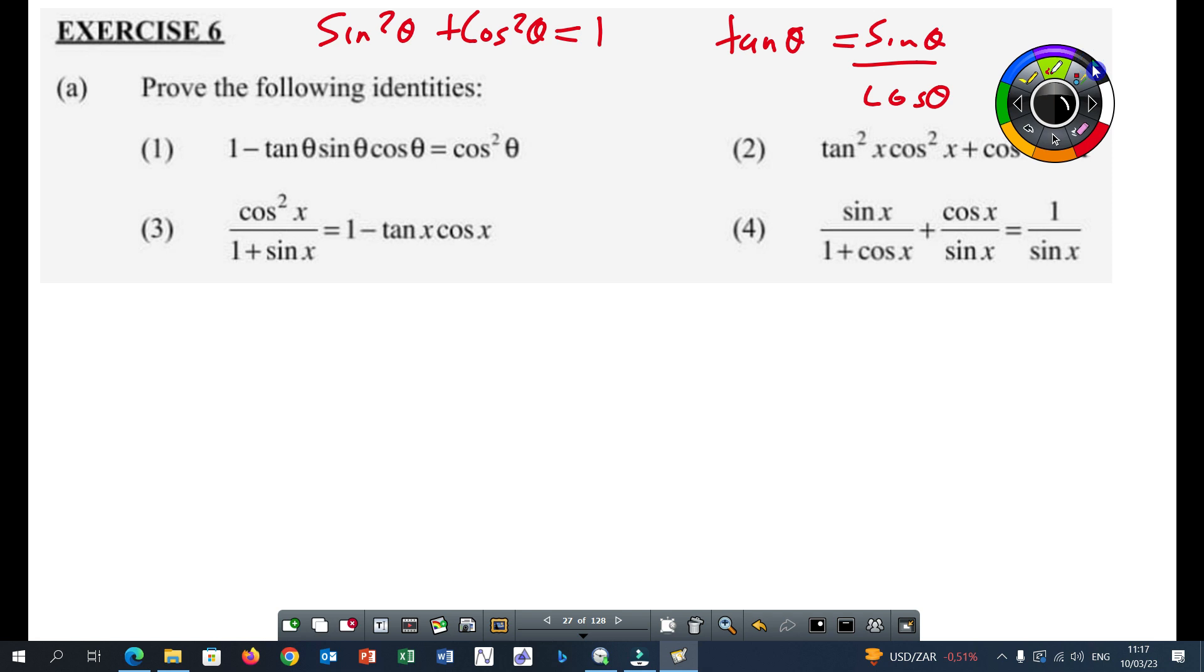So let's start with a simple one here, like the first one. I'm going to duplicate the tape. So we have 1 minus tan theta. Look at the instructions. It says prove the following identities. So 1 minus tan theta times sin theta times cosine of theta is equal to cos squared theta.